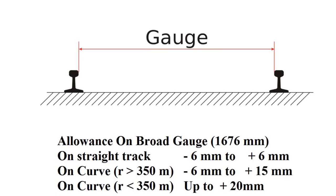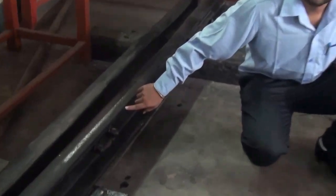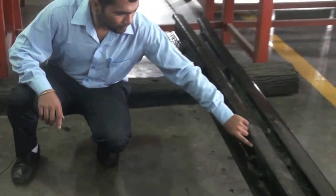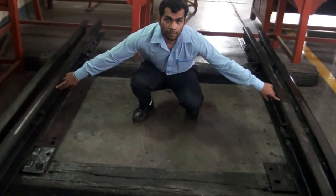Track parameter measurements. Let us first learn about track gauge measurement. A railway track has two rails. These are the inner faces of rails. The perpendicular distance between these two faces is known as the gauge of the track.